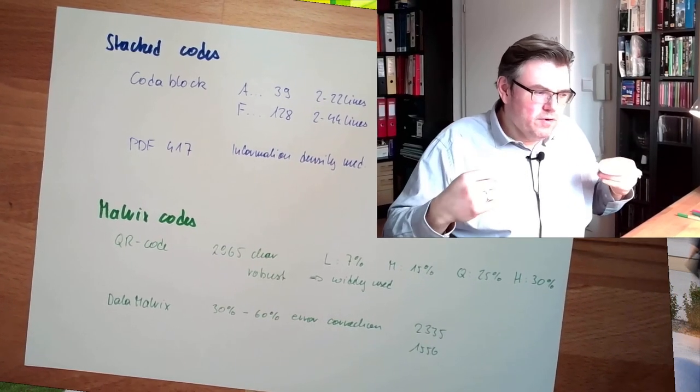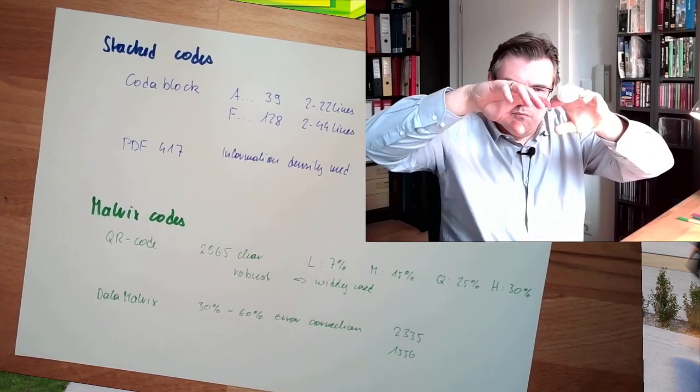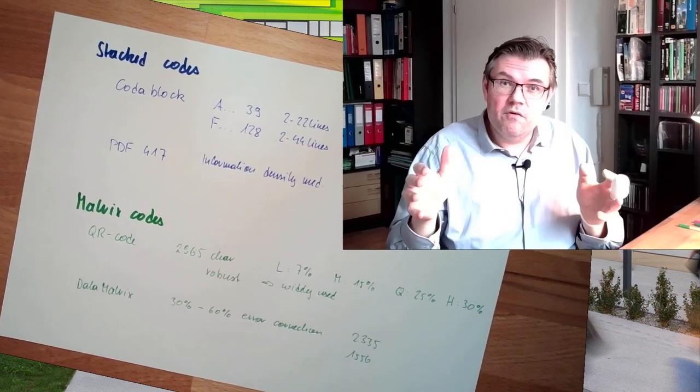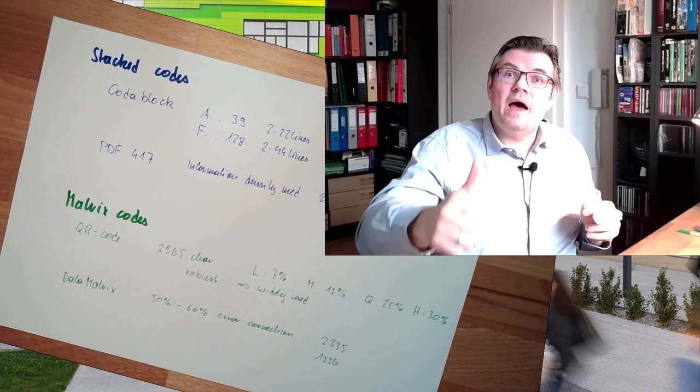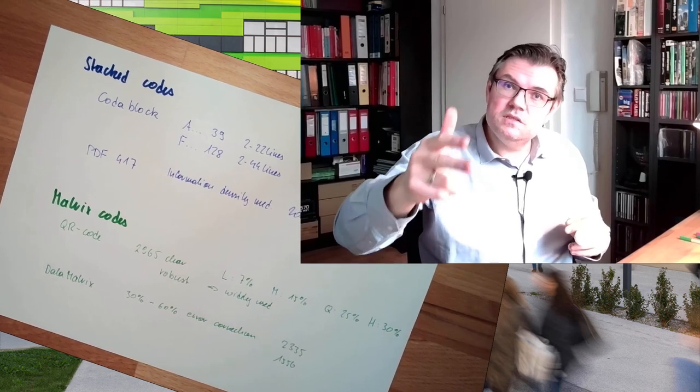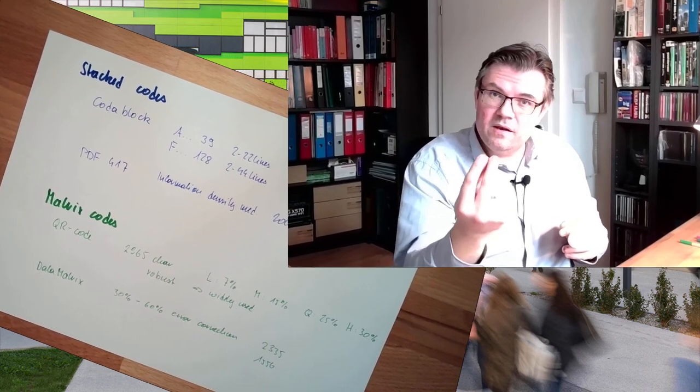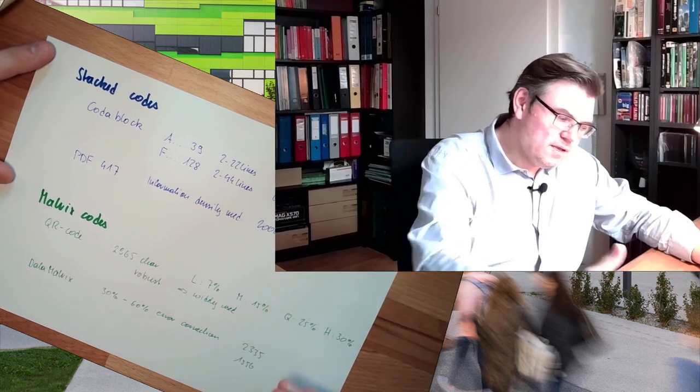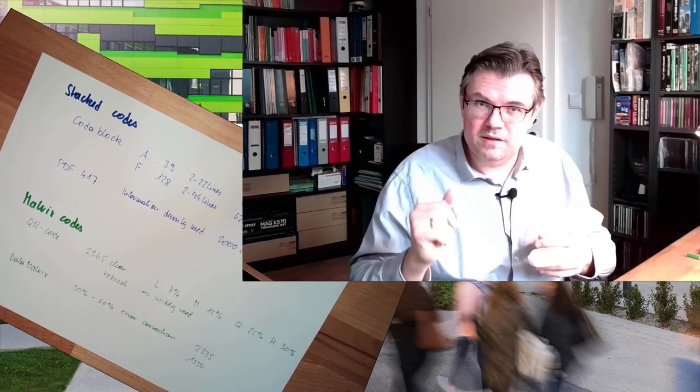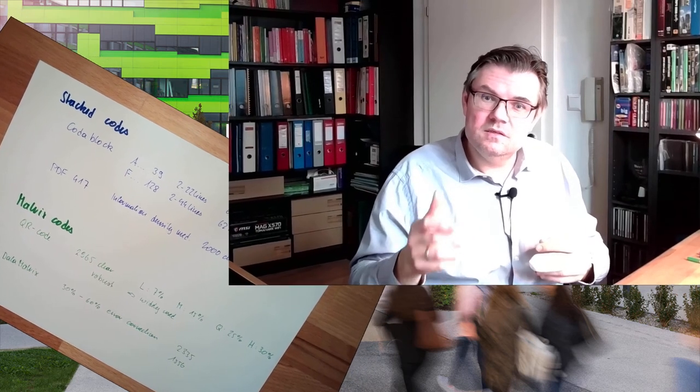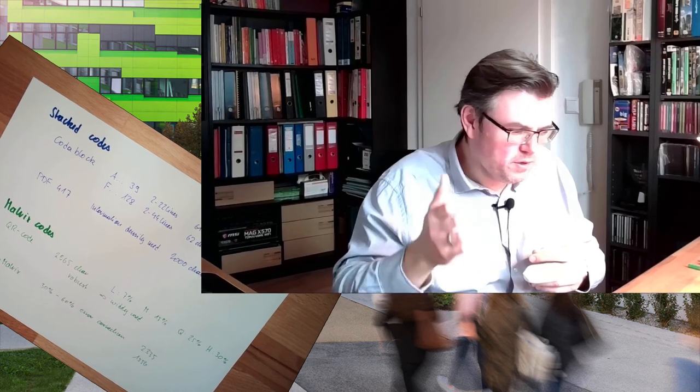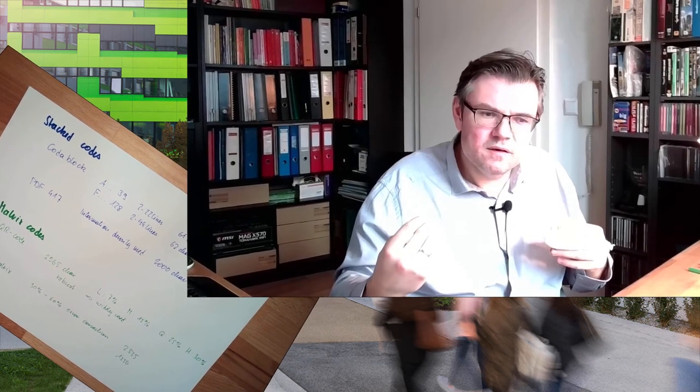The real good reason for 2D codes is to have more information available. You can code more information on one area. You don't have to read this barcode and this barcode and then put it together. With stacked and matrix codes, you have the information as one part and can be sure it's read correctly. This is why they are used - simply to have more data available.